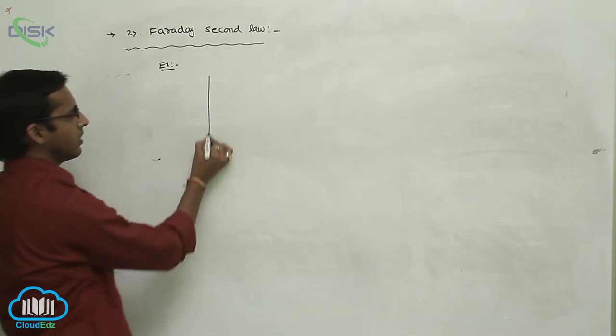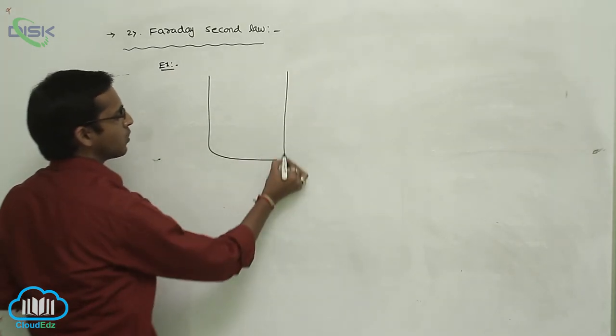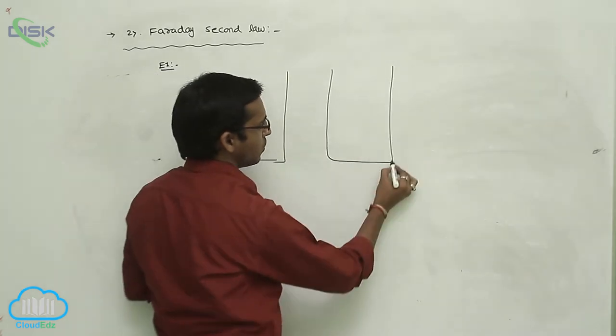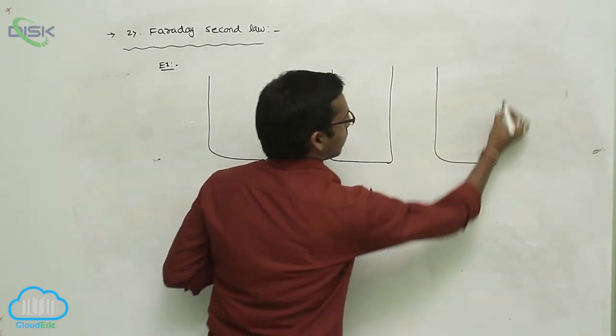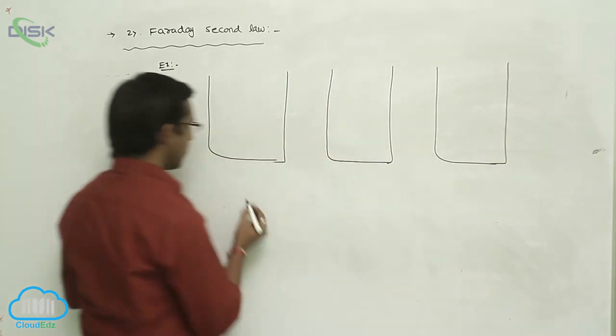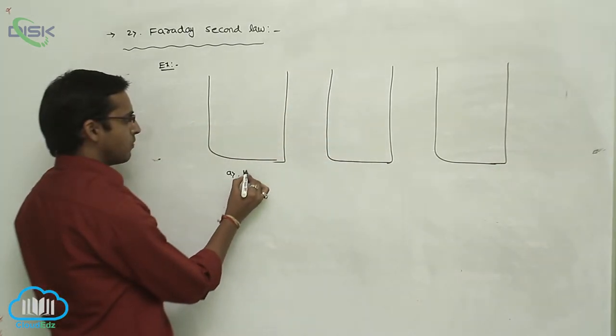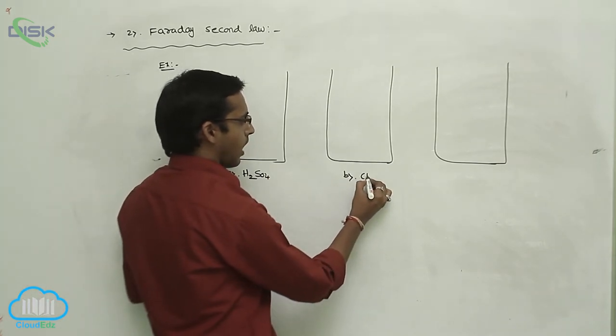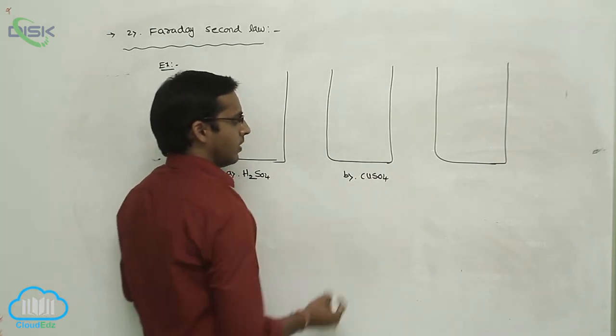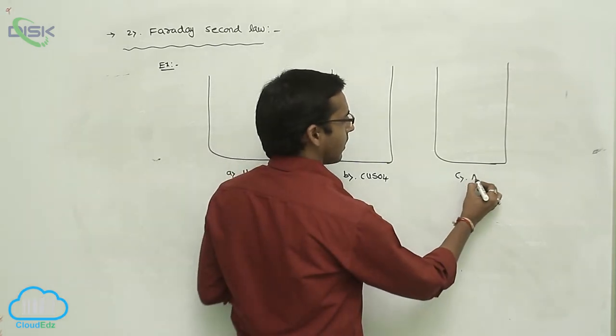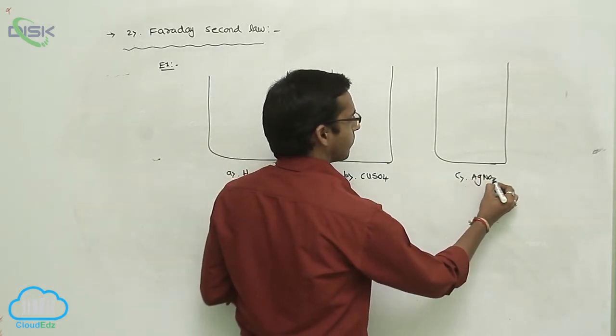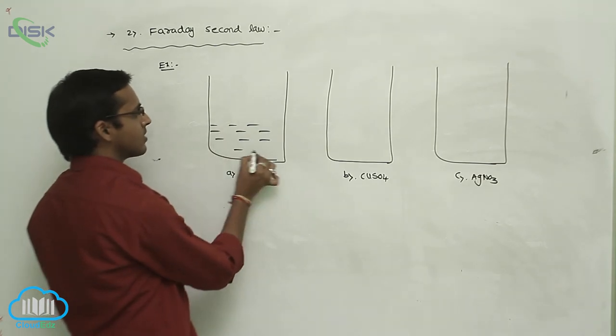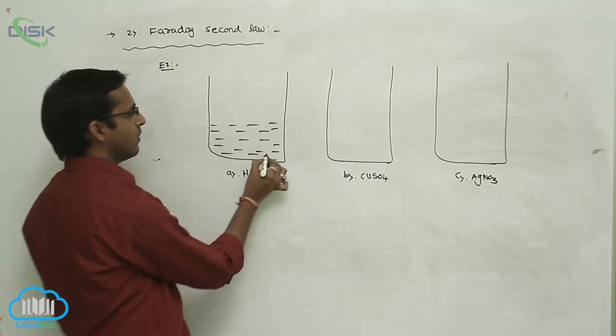First consider three different aqueous solutions. So in that, first one is sulphuric acid, second is copper sulphate, third one is silver nitrate. So three different chemical substances are considered in three different beakers.